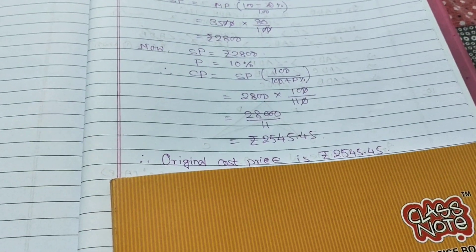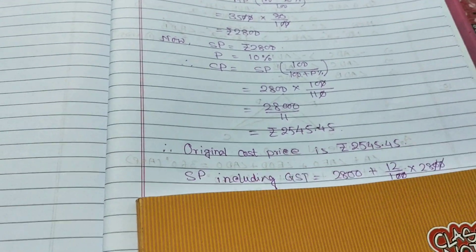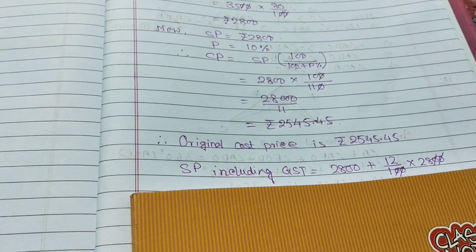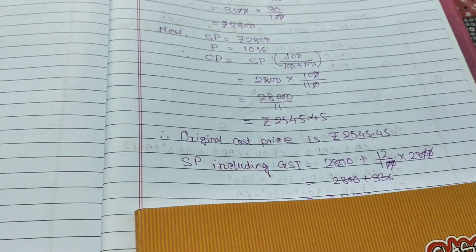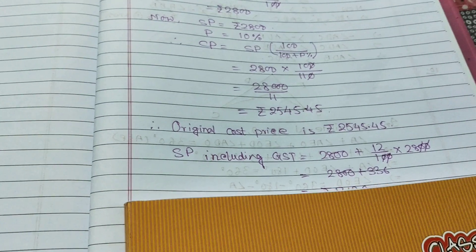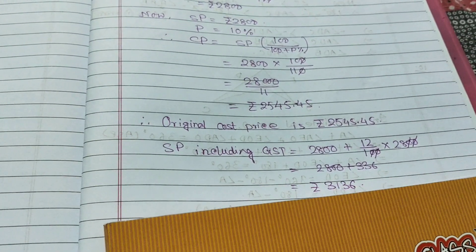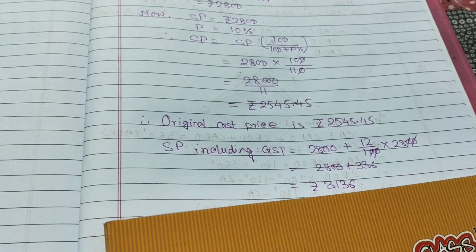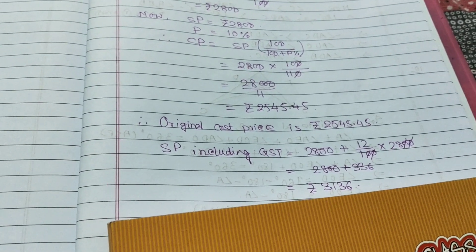Now SP including GST. So SP including GST will be Rs 2800 plus 12% of 2800. So 2800 plus 336 equal to 3136. The original cost price is Rs 2545.45 and SP including GST is Rs 3136.